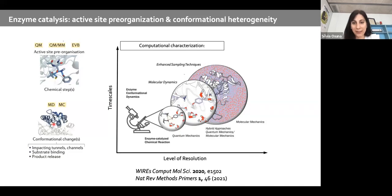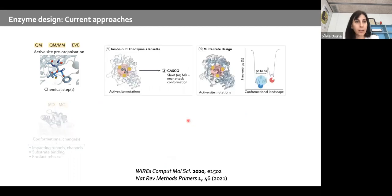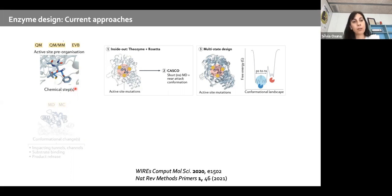The complexity of enzyme catalysis makes the number of strategies designed for computationally designing enzymes very broad and varied. There are different options, and while I don't have time to explain all the approaches that have been developed, I'd like to provide some key ones. I'll differentiate them by whether they put more focus on the chemical steps or more focus on the conformational changes.